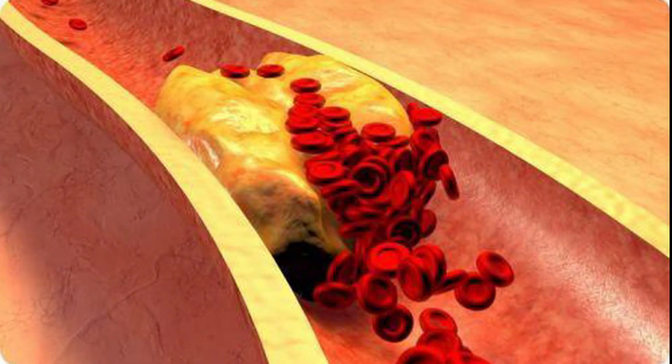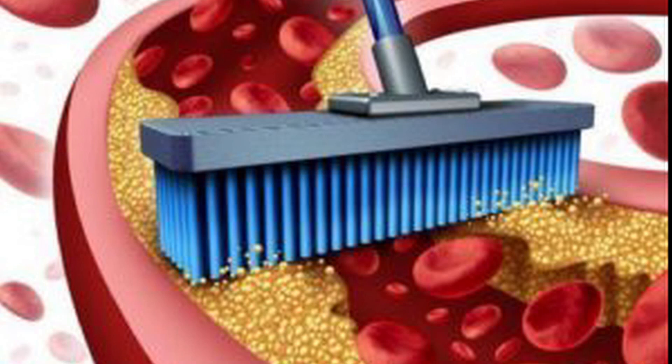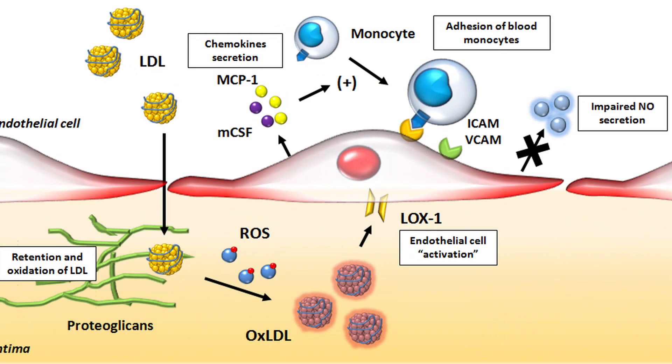There are two types of cholesterol: high-density lipoprotein (HDL), also referred to as good cholesterol, and low-density lipoprotein (LDL), also referred to as bad cholesterol. LDL is made up of fats and proteins and contributes to plaque buildup in the arteries. This extra buildup makes the arteries less flexible and leads to atherosclerosis, or hardening of the arteries.